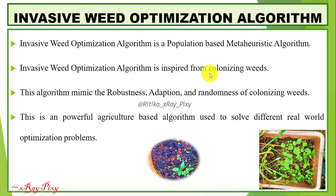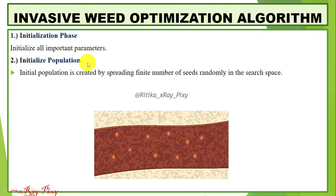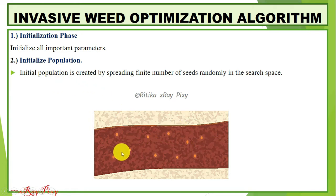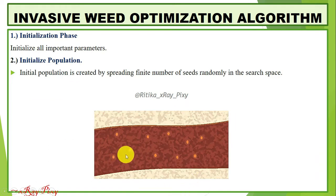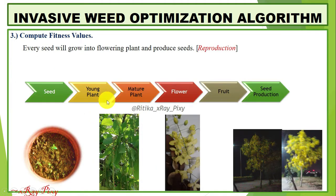This algorithm is inspired from colonizing weeds and can be used to solve different real-world optimization problems. The steps followed are: first, the initialization phase, where all important parameters are initialized. Next, the population is initialized by spreading a finite number of seeds randomly in the search space. After that, we compute the fitness value for each seed.